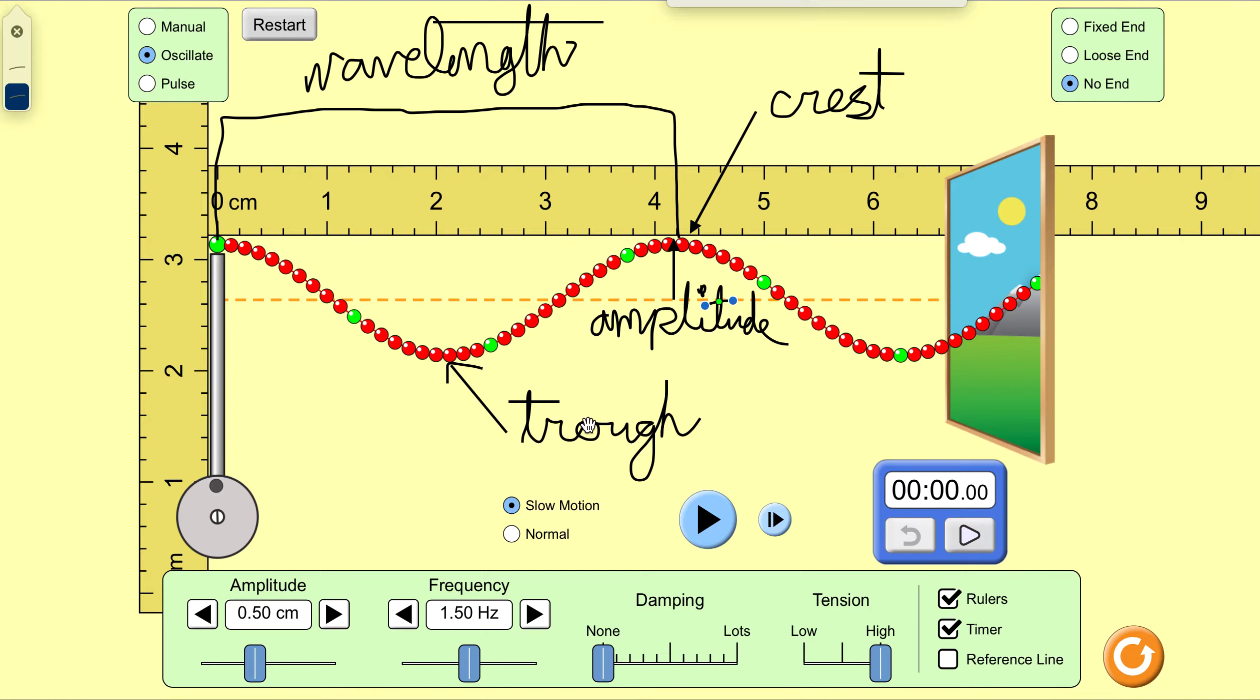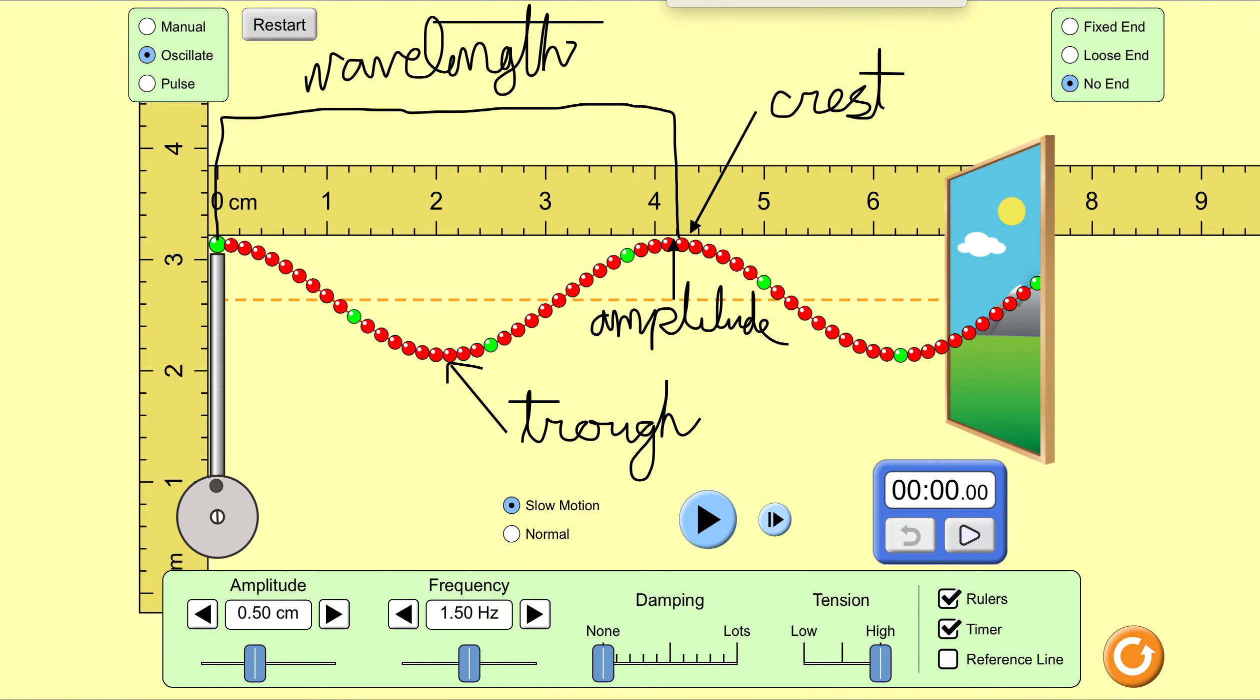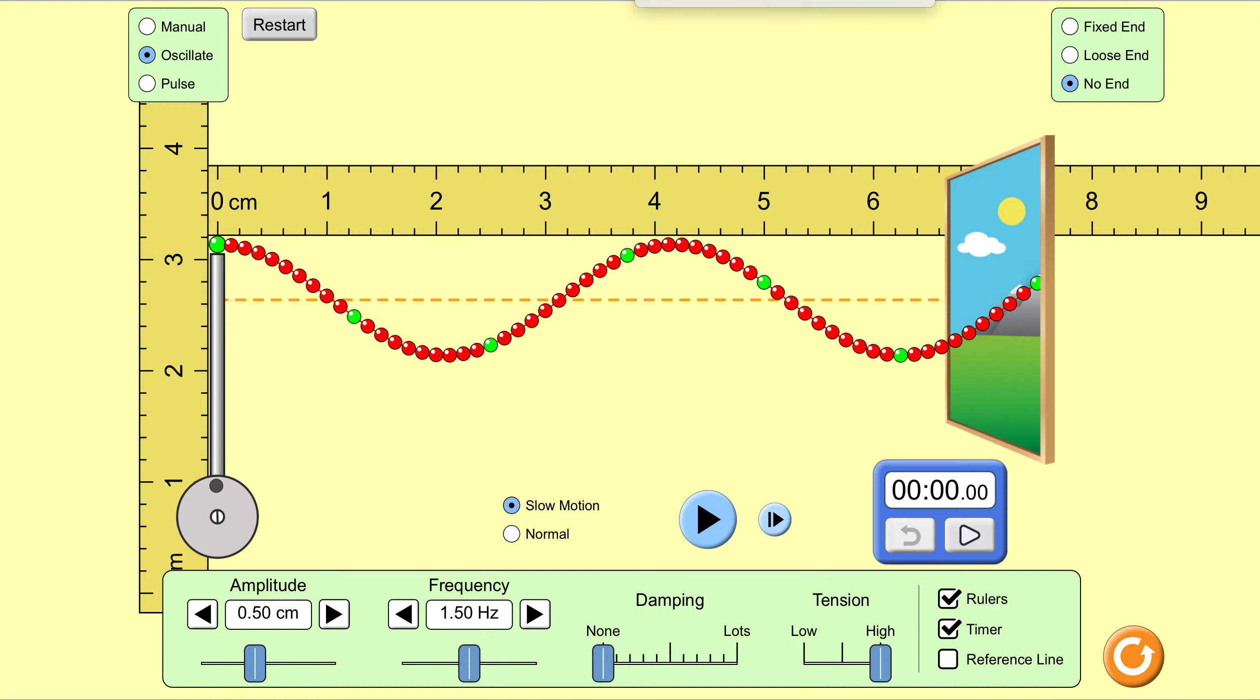So these are the basic terms for a wave: wavelength, amplitude, trough, crest. There are some other things that they wanted us to mark on here. I'm going to get rid of all the marks I just made.